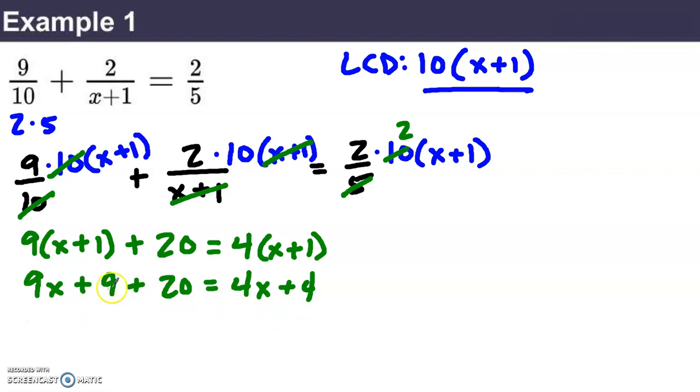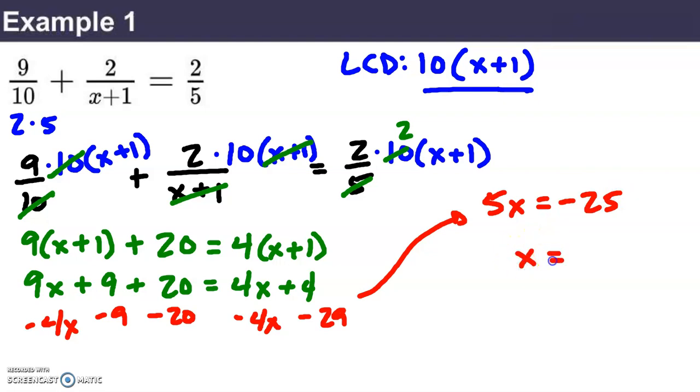And now, I want to think about maybe getting to that place where I've got all my x's on one side and all my number of terms on the other side. So, if I subtract 4x from both sides, and maybe subtract a 9 and a 20, that's minus 29. What I'll get is something like 9 minus 4 is 5x. If I've got 4 minus 29, that's negative 25. And if 5x is negative 25, x is negative 5.